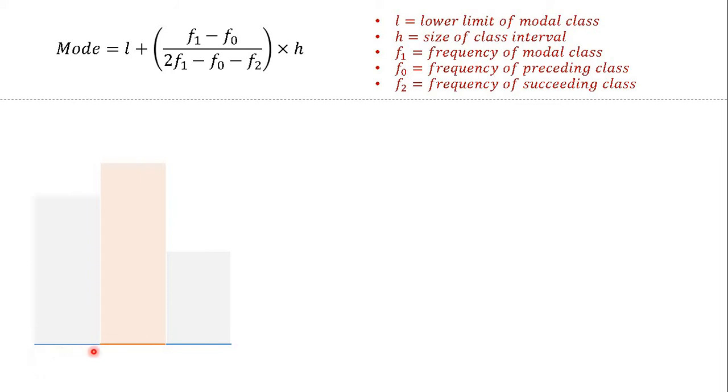Here the horizontal axis represents class interval and vertical height represents the frequency. This is the modal class which we can see has the highest frequency. And it has lower limit L here. F1 is the frequency of the modal class. F0 is the frequency of the previous class. And F2 is that of the succeeding class.